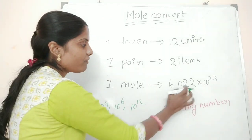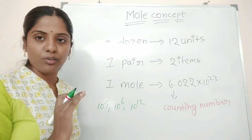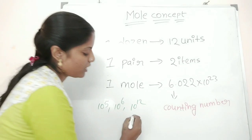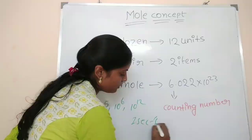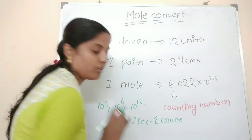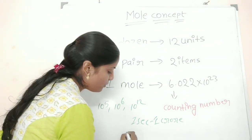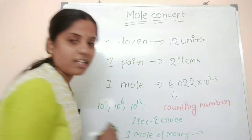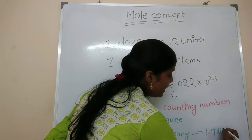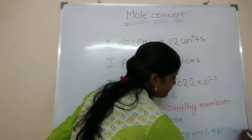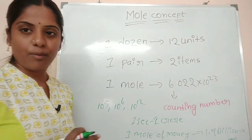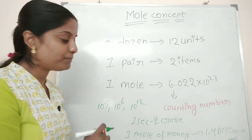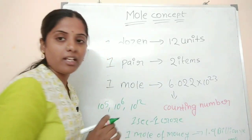How big a number is this? Suppose you have 1 mole of money and you need to pay 1 mole of rupees. If you pay 1 crore every second, how many years would it take to pay off 1 mole of money? It would take 1.9 billion years!